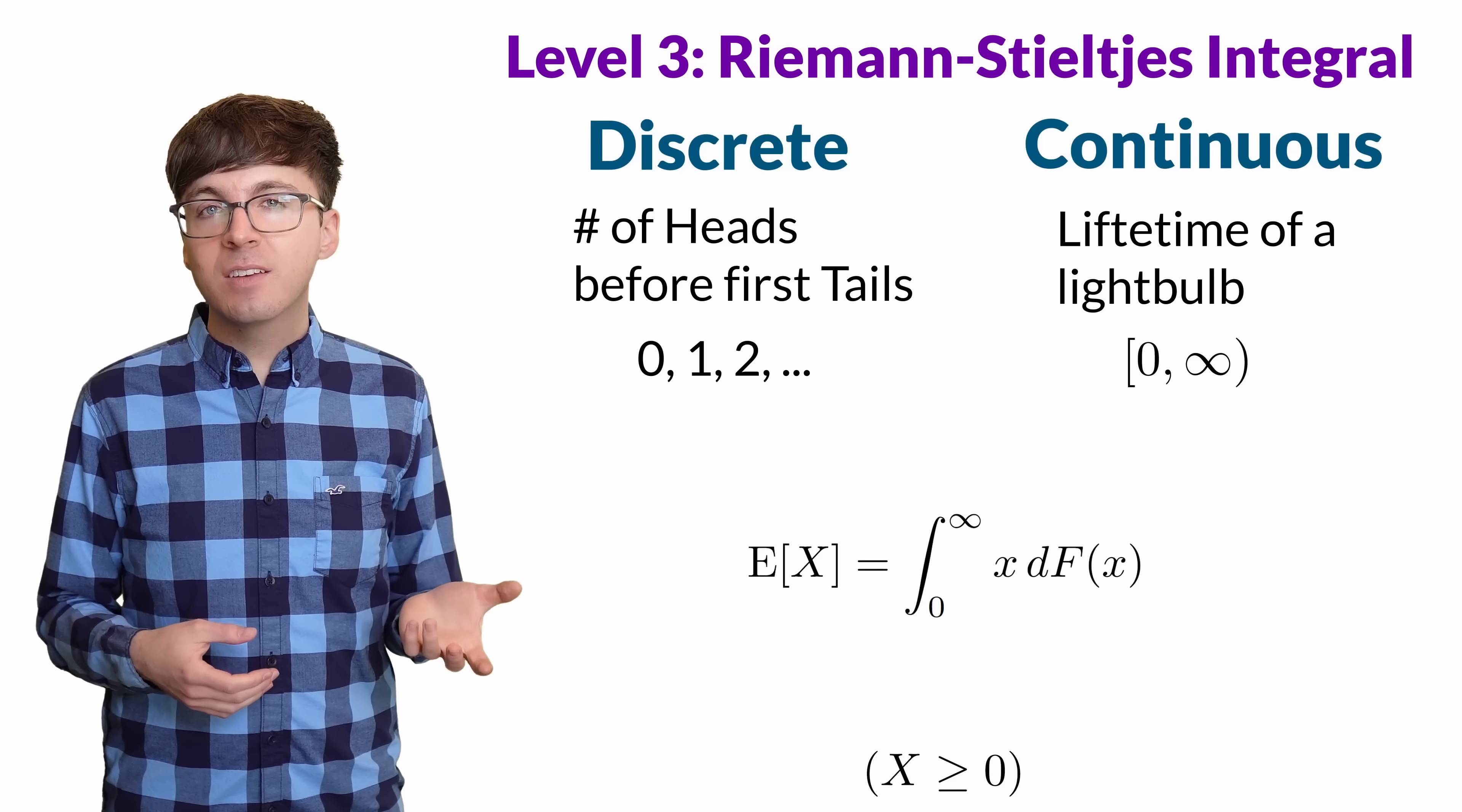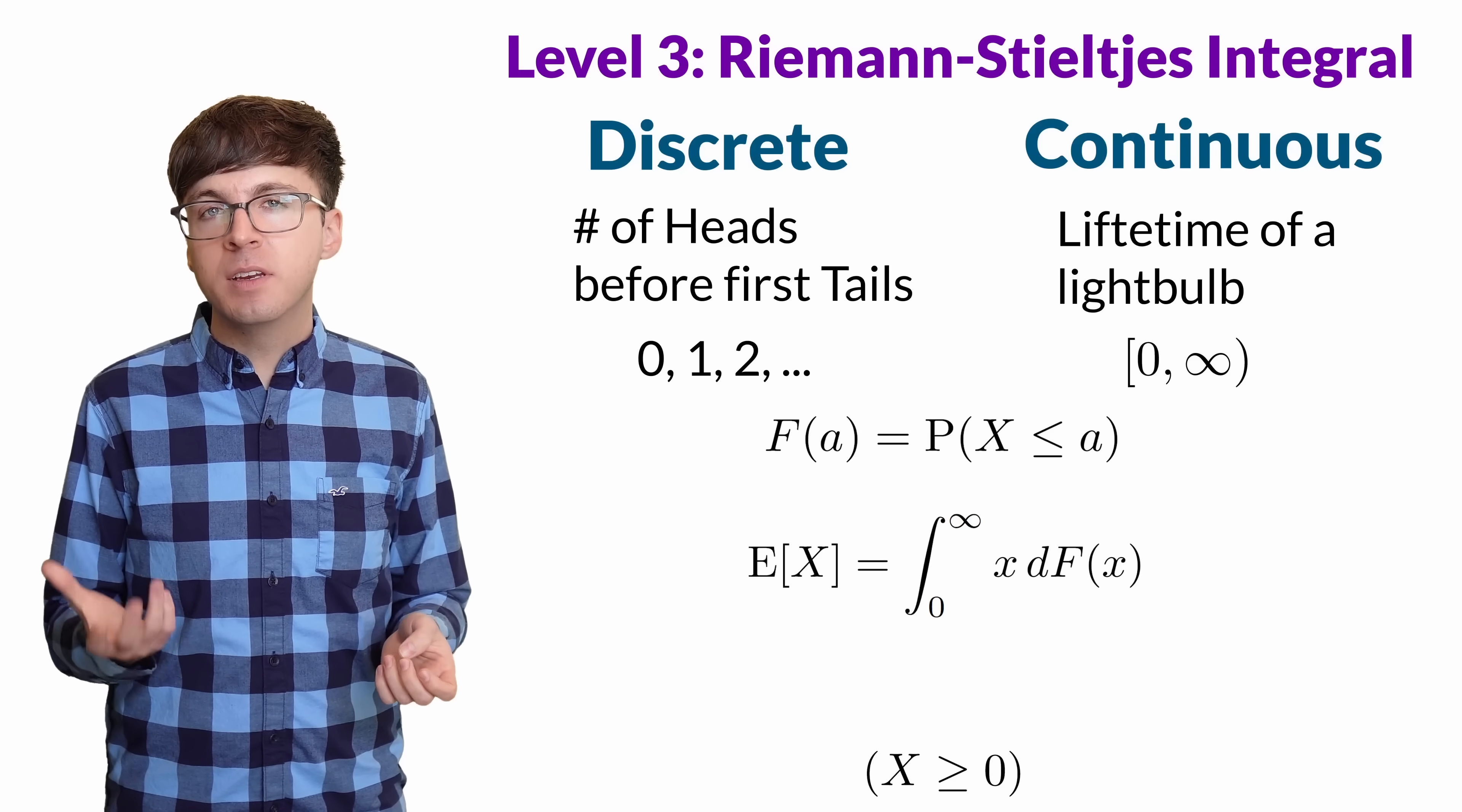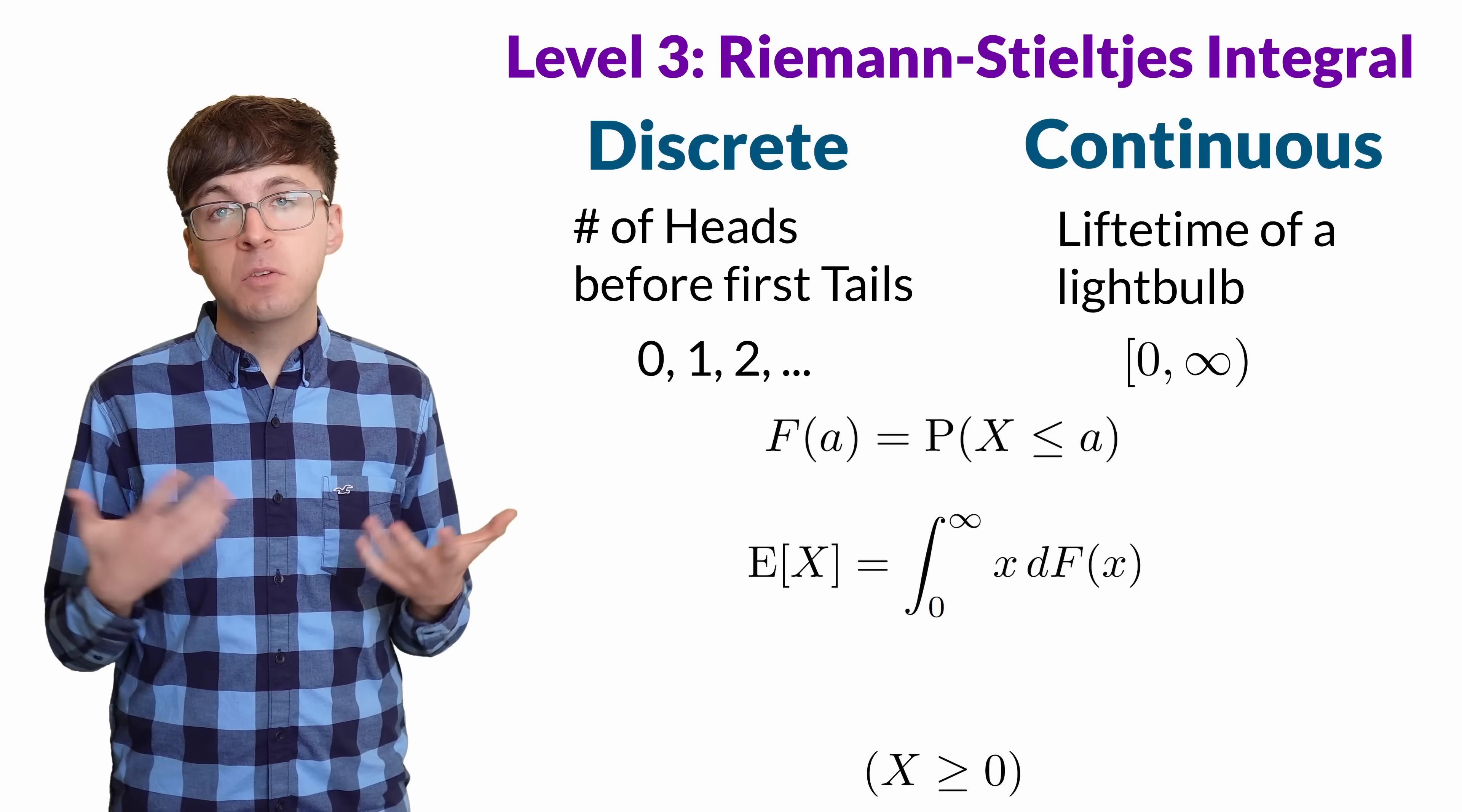We integrate x with respect to the variable's distribution function, or CDF. The CDF of a random variable is the function F(a), which is the probability x is less than or equal to a. This function makes sense for every random variable, discrete, continuous, or otherwise.